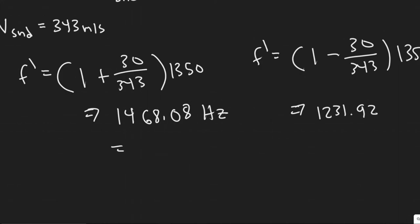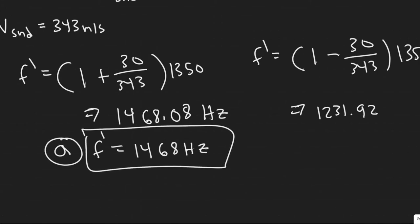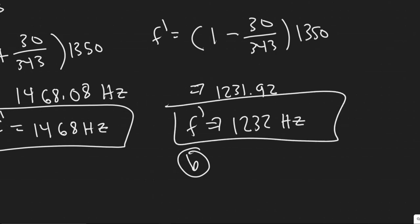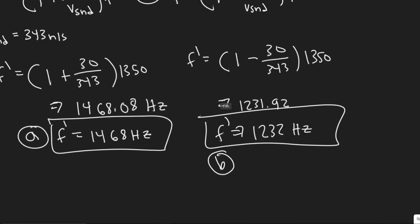So we can round both of these to the whole number. So f is going to be 1468 hertz. Keep in mind that this one is for A. Now for B, we'll just say 1,232. Keep in mind frequency, this is hertz. And yeah, so your answers for both these are going to be right here, the frequencies that they're going to observe.